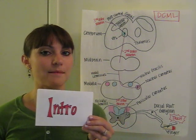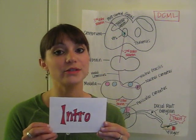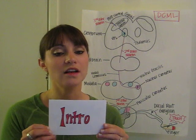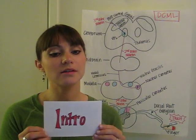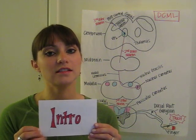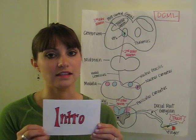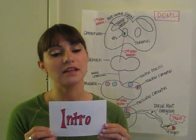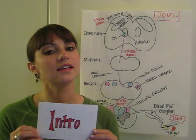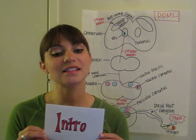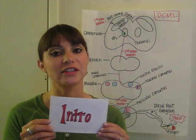The DCML tract can be confusing. The UEs are lateral — fasciculus cuneatus. The LEs are more medial — fasciculus gracilis. And the medial lemniscus is a tract of white matter.